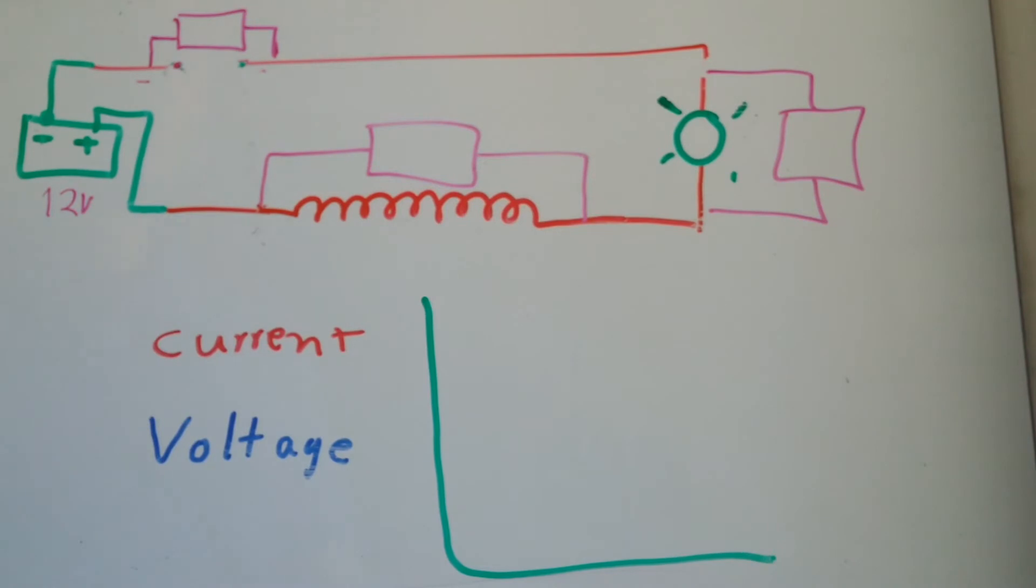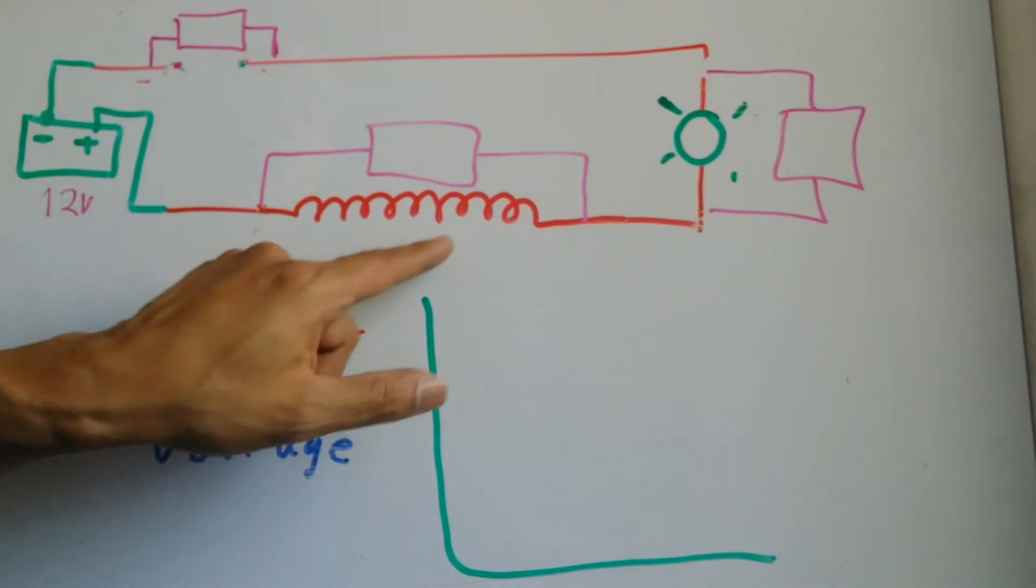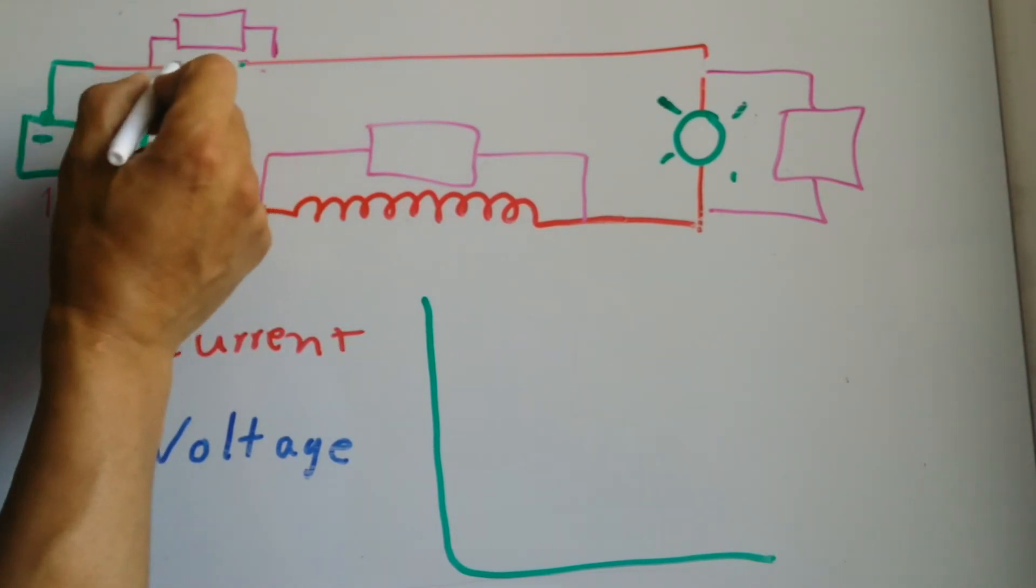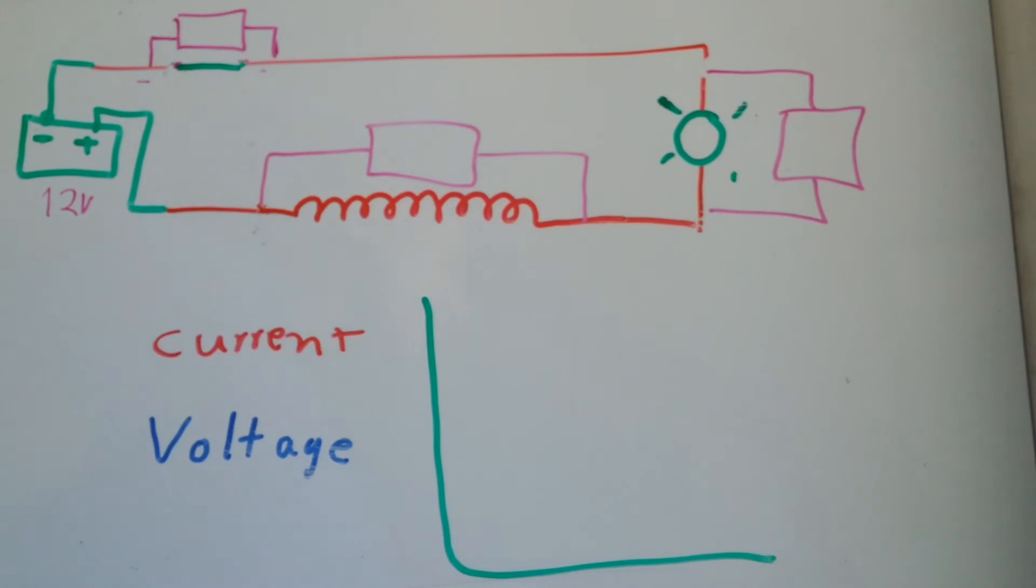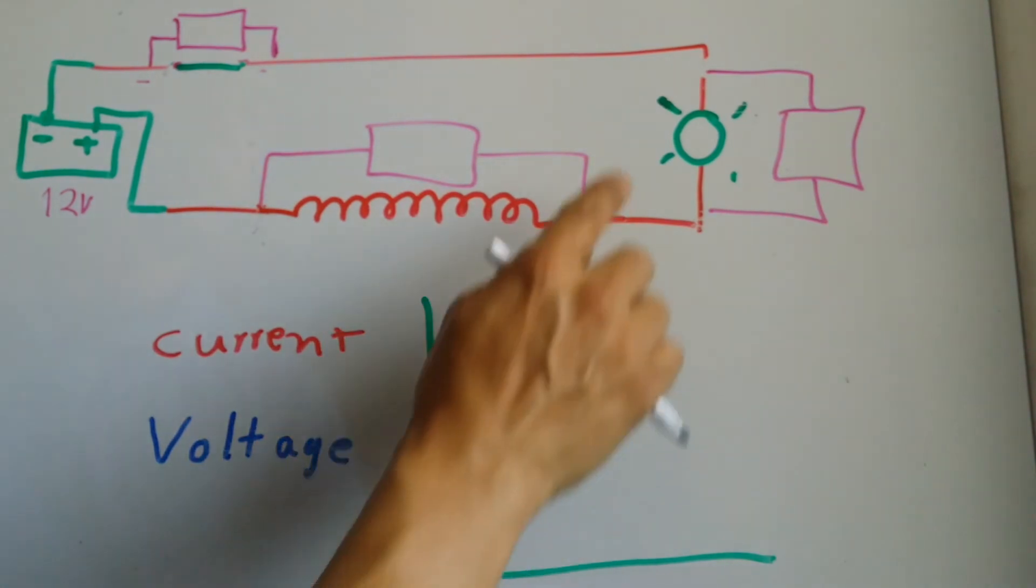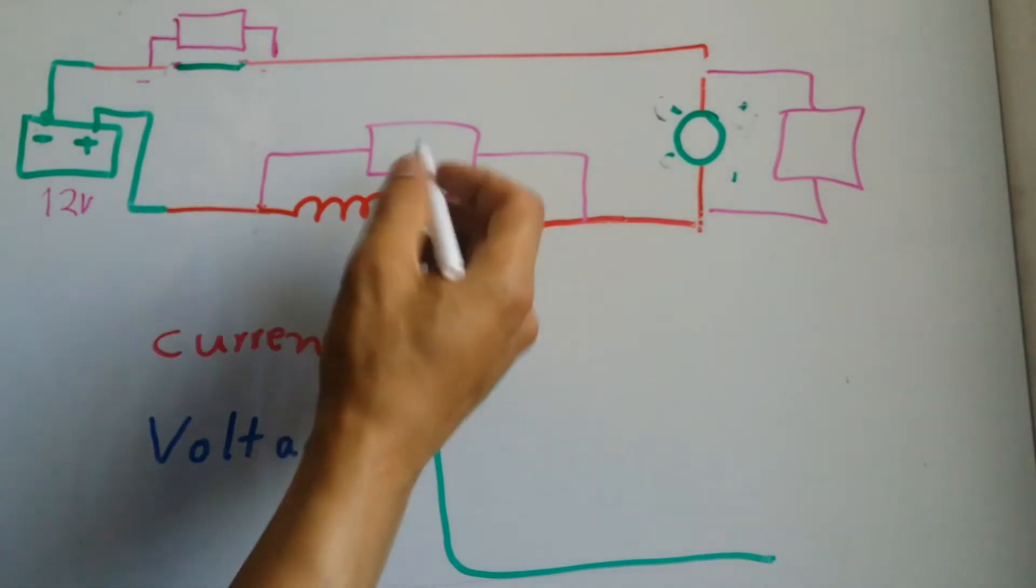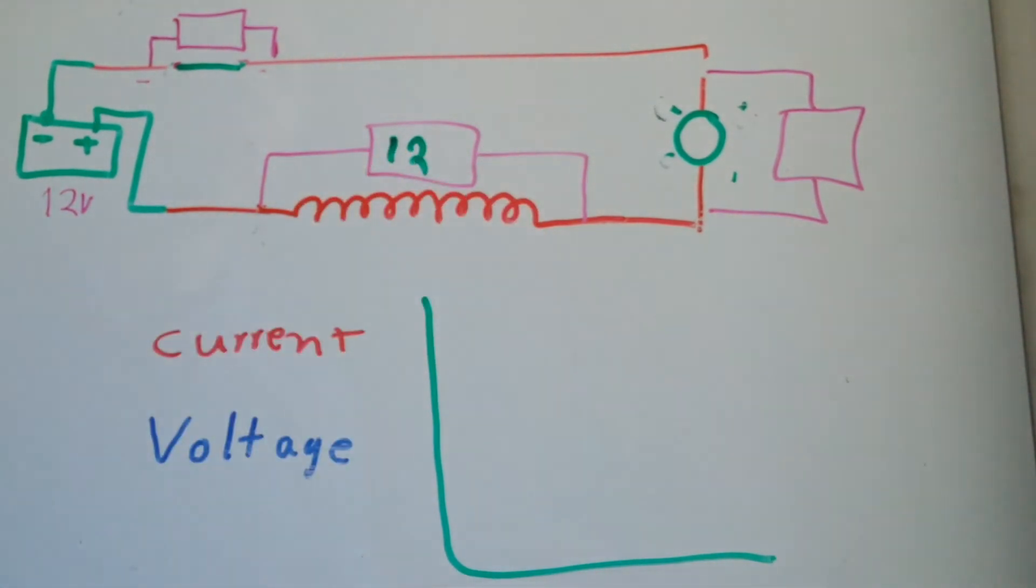Since now you know how the circuit works without the inductor, I added the inductor back on and I am about to turn the switch on. As soon as I turn the switch on, something strange happens. Instead of the light getting the full voltage immediately, the inductor is the one that gets the whole voltage.